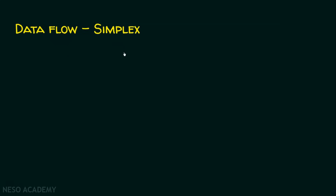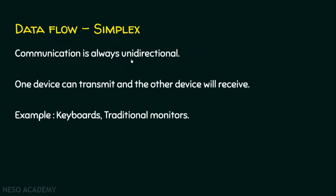Firstly, the simplex. It is always a unidirectional communication — one node can transmit and the other will receive. For example, keyboards. Just take a keyboard connected to a CPU: the keyboard is going to give data to the CPU, whereas the CPU is not going to give any data to the keyboard.